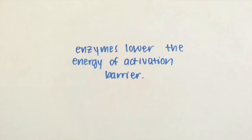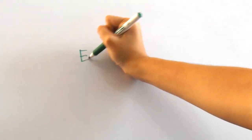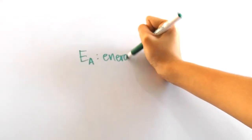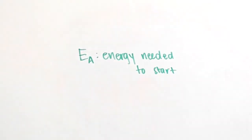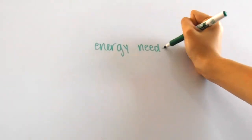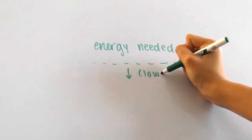This entire thing means that they lower the energy of activation barrier. Now what is that? Energy of activation stands for the amount of energy a chemical reaction needs to start. By lowering this barrier, enzymes decrease the amount of energy needed so chemical reactions can begin sooner.